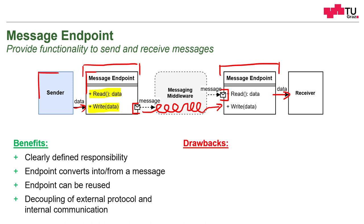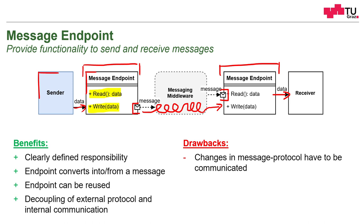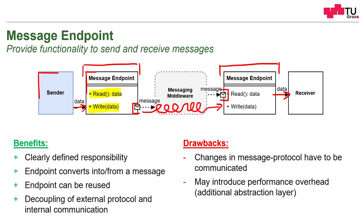The drawbacks include that changes in the message protocol have to be communicated. If only one message endpoint changes the data format, it's no longer compatible with the others. If the message format changes, all endpoints have to consider this and change accordingly. It may also introduce a performance overhead because we have an additional abstraction layer.